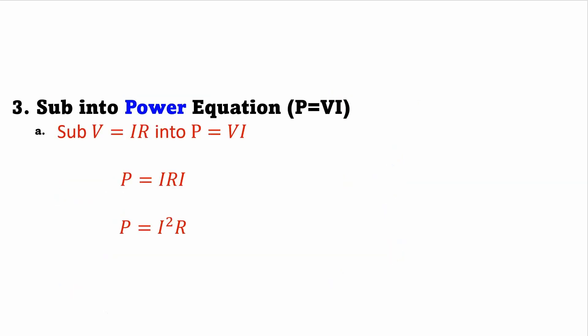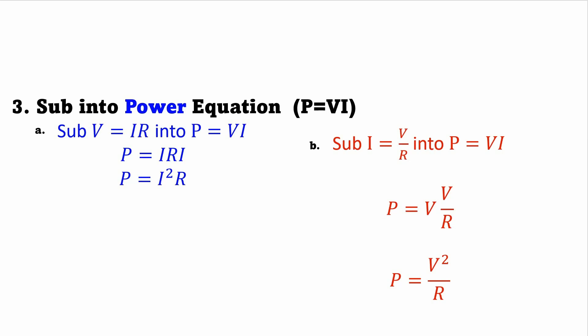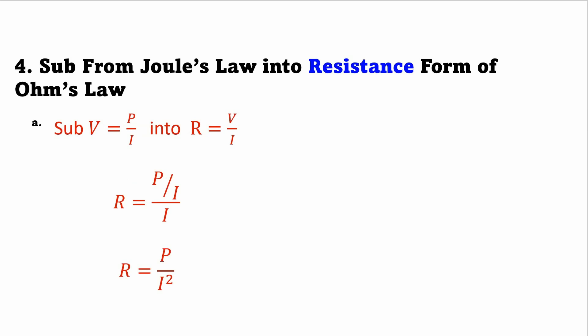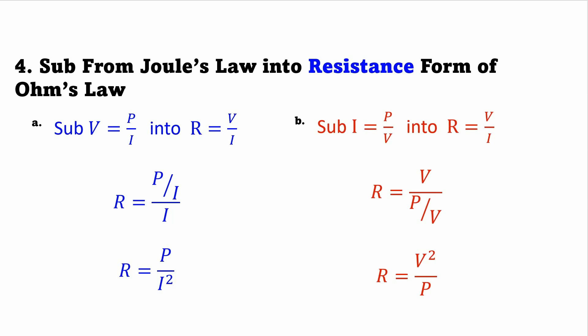Next, I can do some substitution. If I substitute voltage equals current times resistance into Joule's Law, I get power equals current times resistance times current, which is power equals current squared times resistance. Also, if I substitute current equals voltage over resistance into the power equation, I get power equals voltage times voltage over resistance, which is power equals voltage squared over resistance. I can also substitute voltage equals power over current into Ohm's Law to get resistance equals power over current squared. And substituting current equals power over voltage gives resistance equals voltage squared over power.